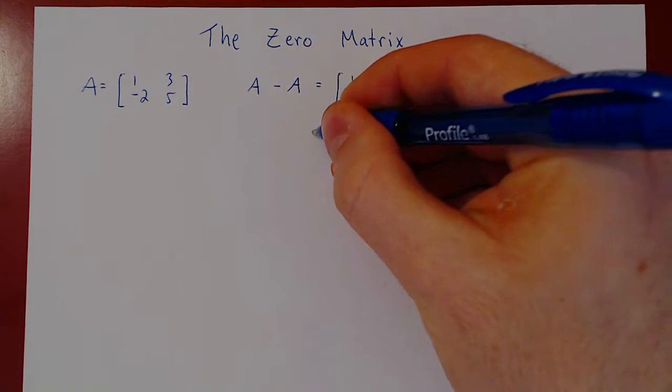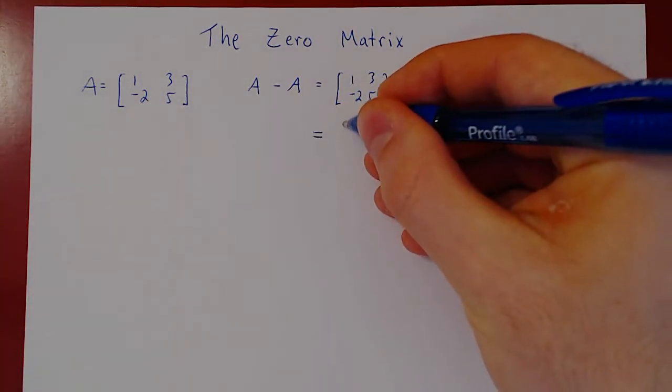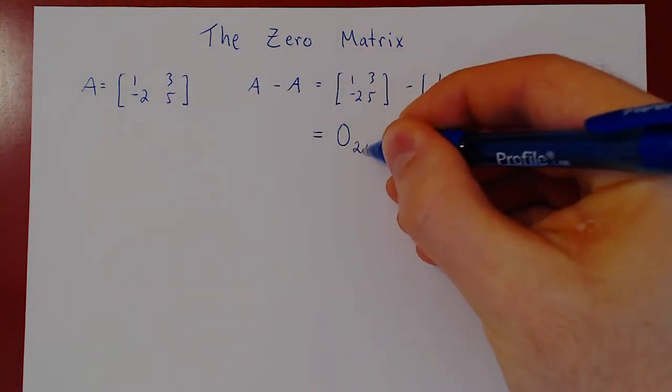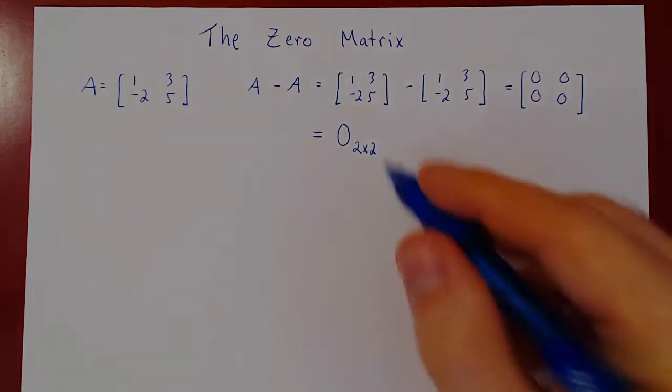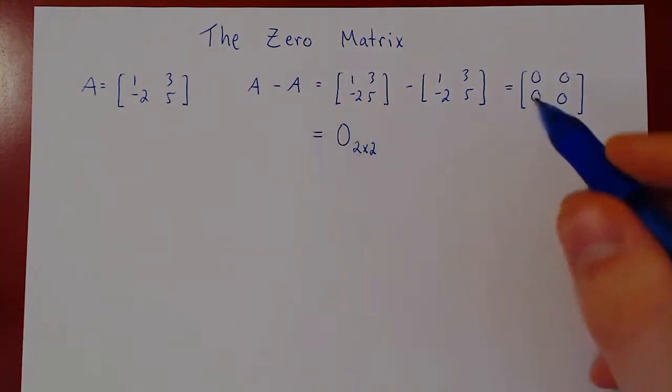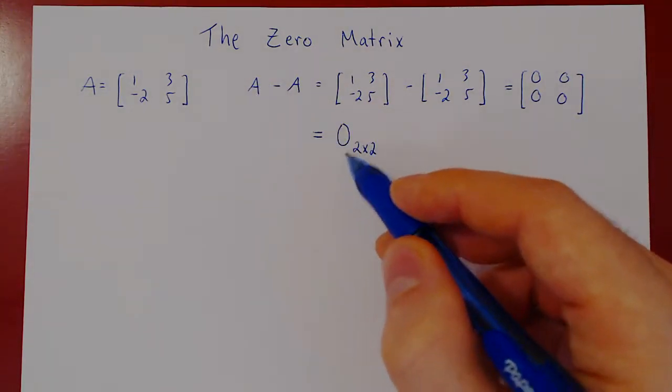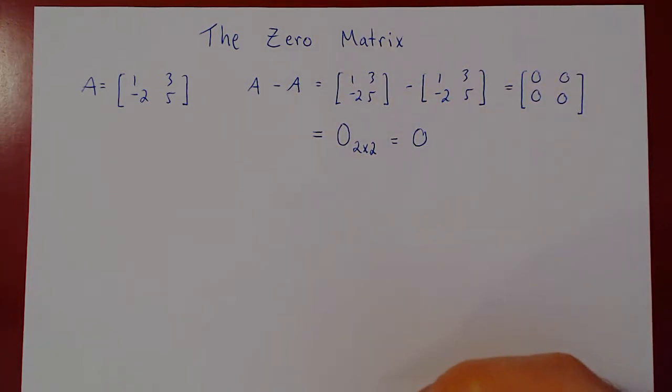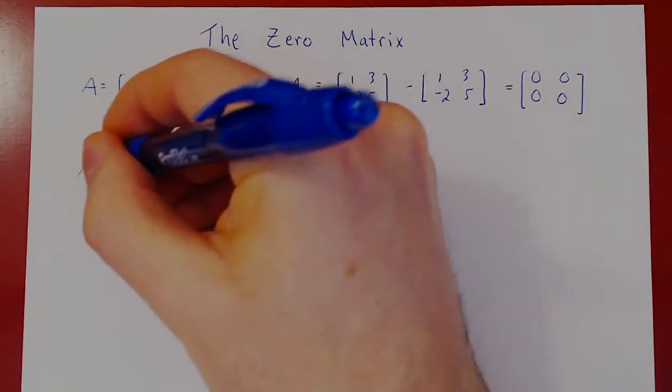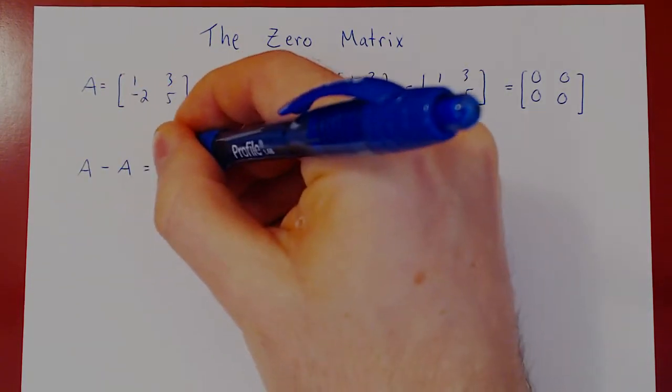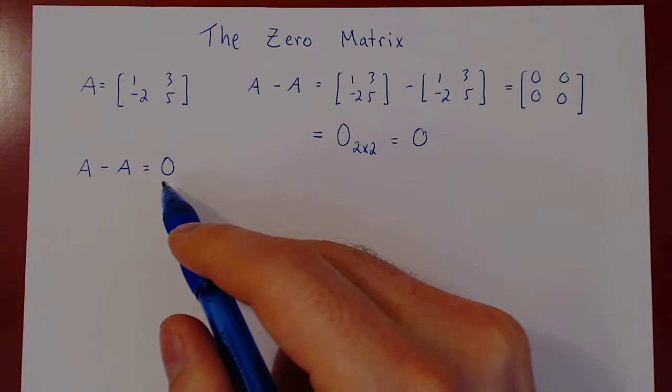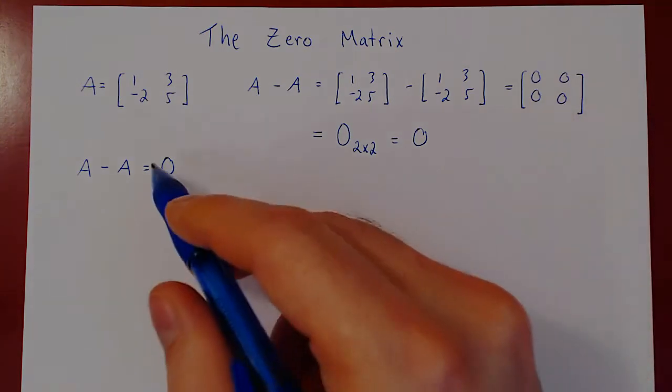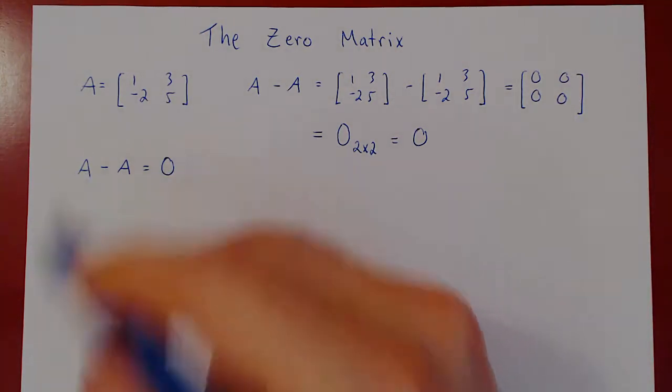Now we can write this in two ways. We can write zero, so an uppercase zero, and we can specify the size, which is a 2 by 2 zero matrix. But usually we don't write the size because implicitly, whatever the size of A is, the matrix zero will be of the same size. So we can simply write zero. So if you ever have matrix A minus itself, you can simply write this as equal to zero. We understand here that this is a matrix where every single entry is equal to zero, and the size of this matrix is the same as the size of A.